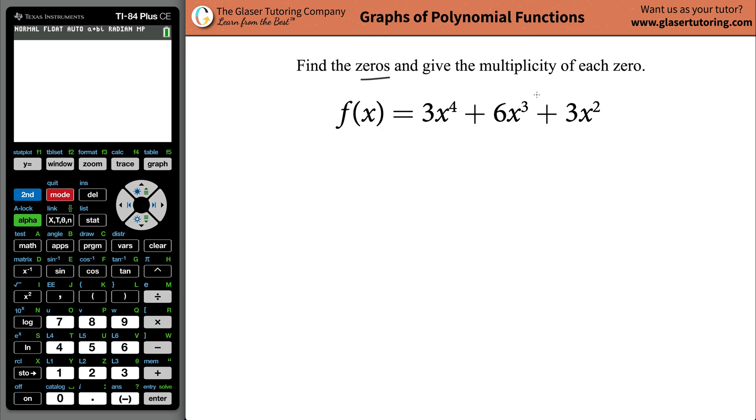Today I want to teach you how to find the zeros and give the multiplicity of each zero of the following function: 3x raised to the fourth plus 6x raised to the third plus 3x raised to the second. So the first thing is that we should really find the zeros, and we should therefore remember zeros is just another word for x-intercept. So what we want to do is we want to factor this on out.